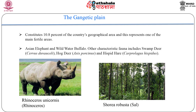The Gangetic Plain zone is one of the largest zones in India, stretching from the Yamuna river eastwards across Uttar Pradesh, Bihar, West Bengal, and the coastal plains of Orissa. This flat alluvial zone is topographically fairly homogeneous and constitutes 10.8 percent of the country's geographical area. This zone supports many large and charismatic mammals such as the one-horned rhinoceros, Asian elephant, and wild water buffalo. Other characteristic fauna includes swamp deer, hog deer, and hispid hare. Sal forest represents potential vegetation along the Himalaya, with relic populations of rhinos, elephants, buffaloes, and swamp deer.